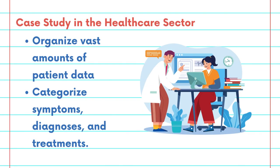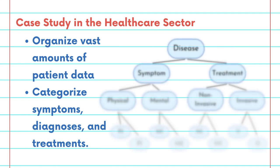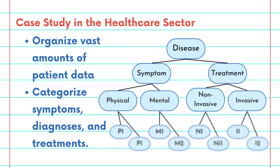Our journey begins with a detailed case study in the healthcare sector. Here, ontologies play a crucial role in organizing vast amounts of patient data. Watch as medical terms within the ontology structure help categorize symptoms, diagnoses, and treatments, leading to more precise patient care.